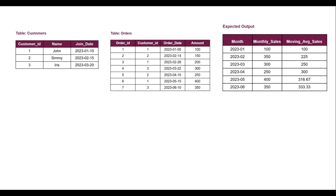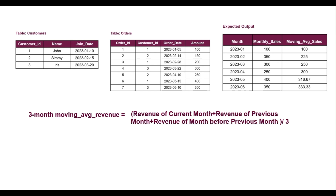Once we have the monthly sales, let's move on to calculate the three-month moving average. To calculate the three-month moving average of sales revenue, we need to consider the current month revenue and the revenue of the two preceding months. The formula is: revenue of current month plus revenue of previous month plus revenue of the month before previous, divided by three.